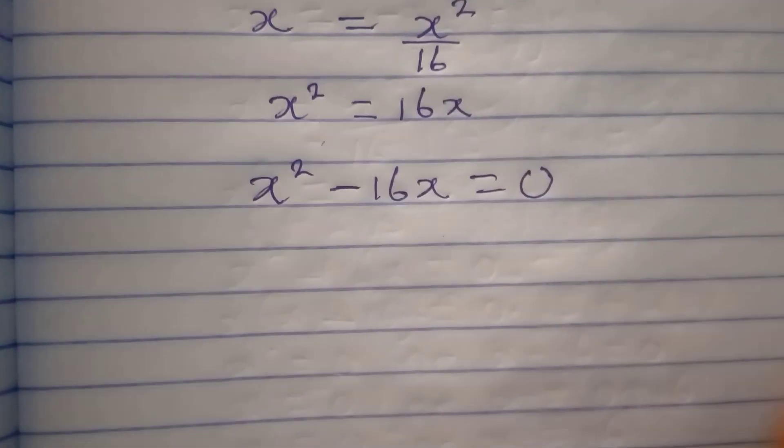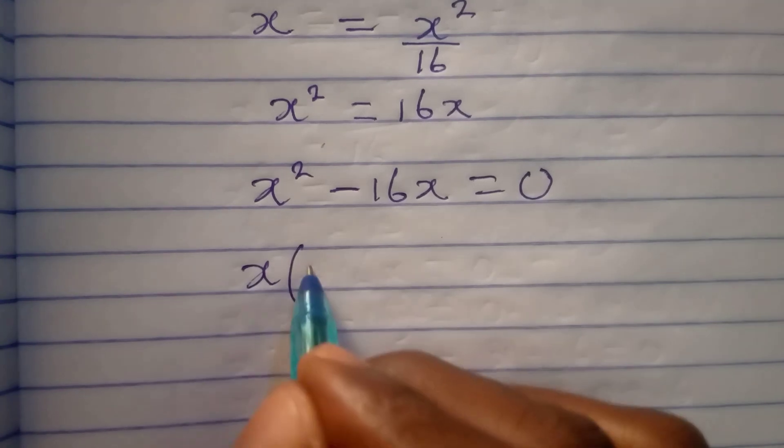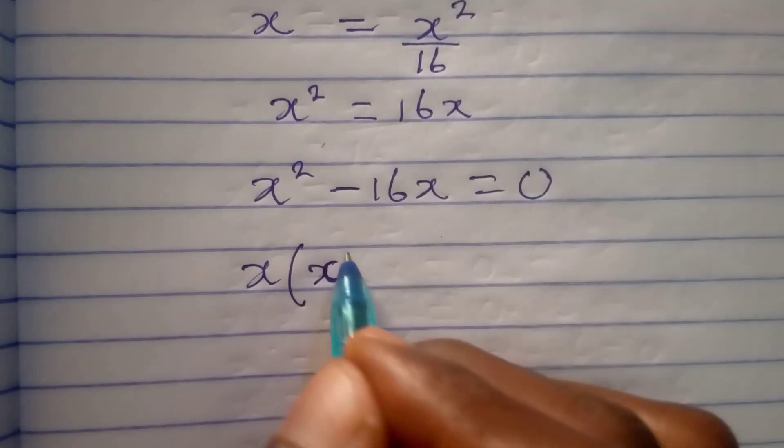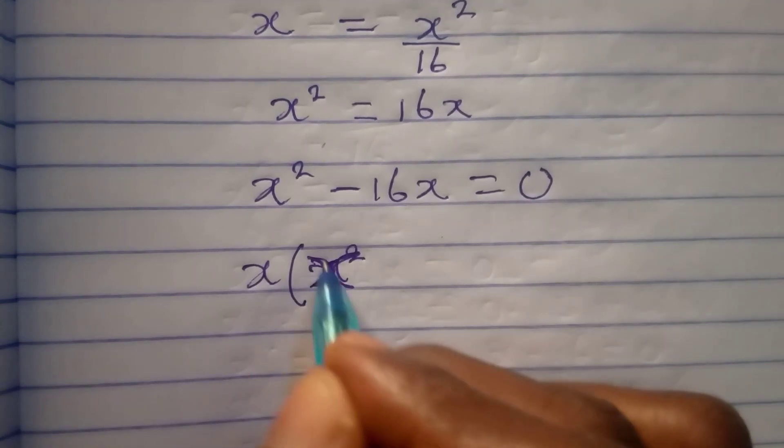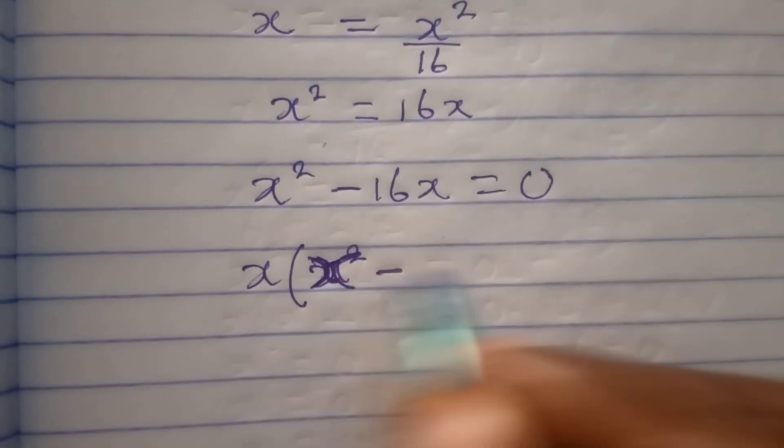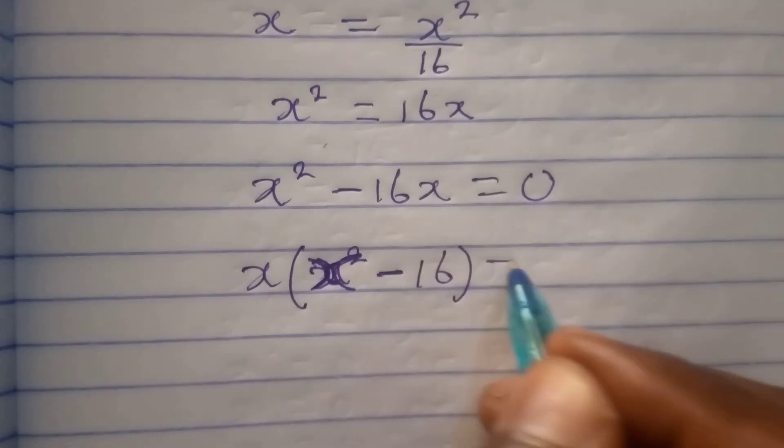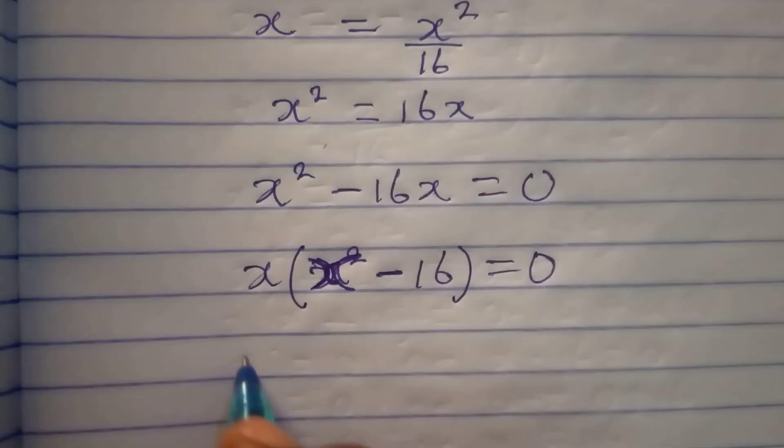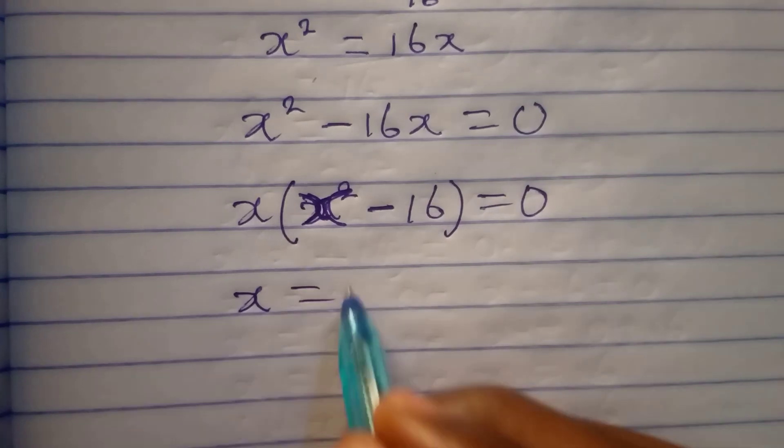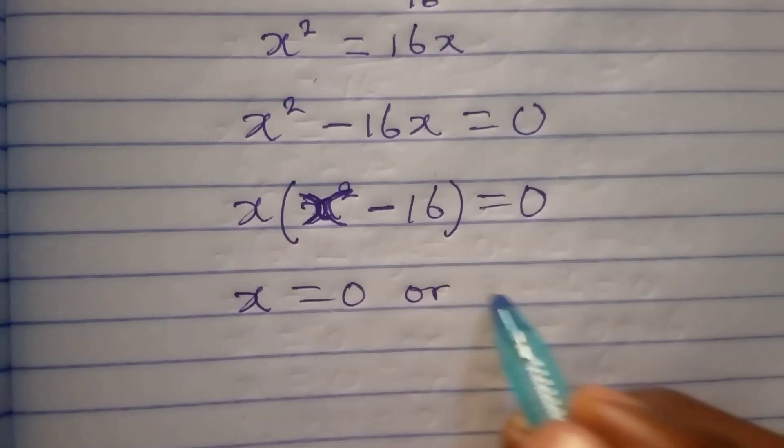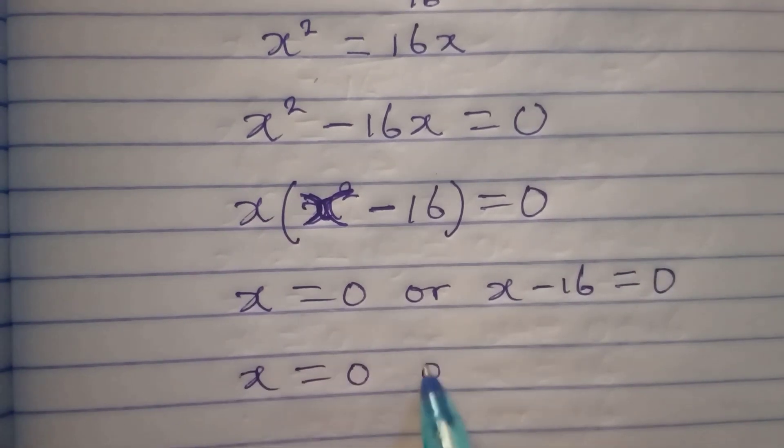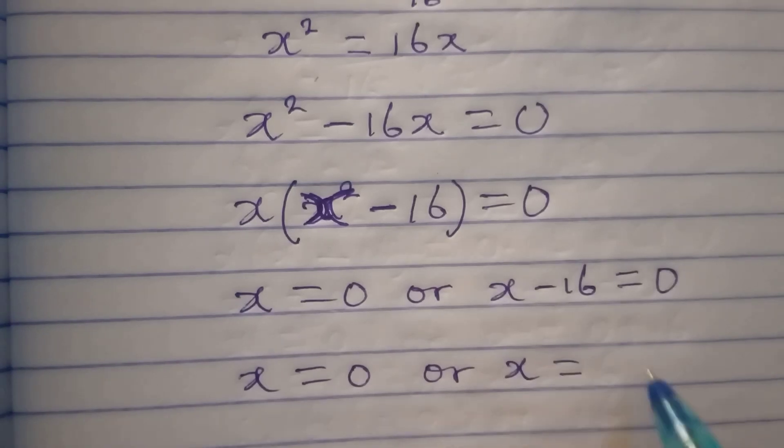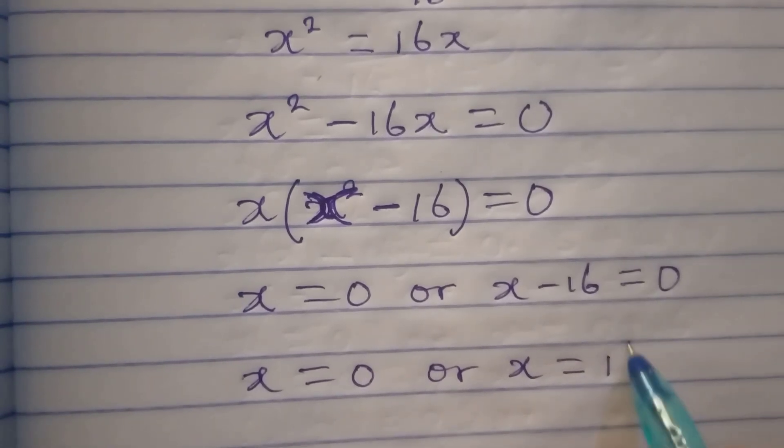Now we factorize because x is common to both of them. We have ordinary x that will remain because one x has gone out, and then minus x has come out so we have 16 over there, and this is equal to zero. Now it is either x is equal to zero or x minus 16 is equal to zero. From here x remains zero or x is equal to zero plus 16 and that will give us 16.